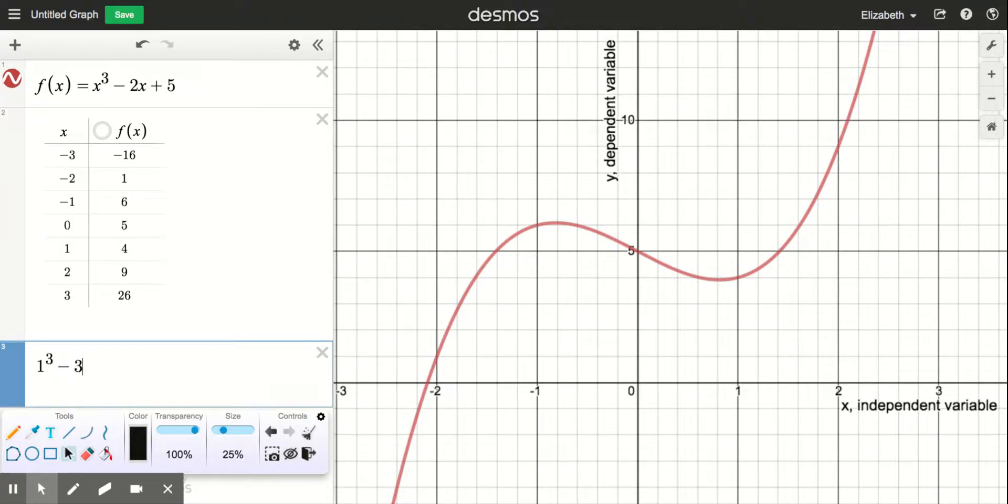The other thing the equation can do is we could work backwards and say, I want to know at what x value the y value is 27, and we could just plug 27 in for y and solve for x.